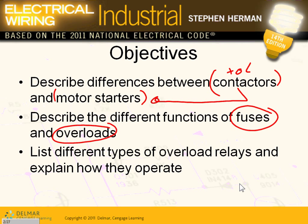You guys know that one. Overload protects the equipment from overloading — from burning. If I have a saw and the saw is supposed to cut through wood, then you jam it against concrete and keep pushing on it, you're overloading that saw. So the overload is supposed to protect you. The fuse is supposed to protect it from ground fault and short circuit. We know that.